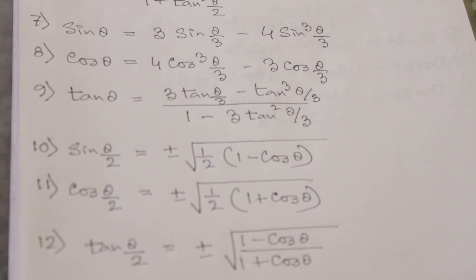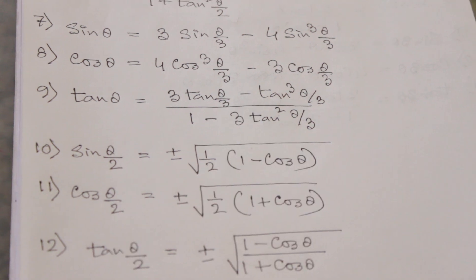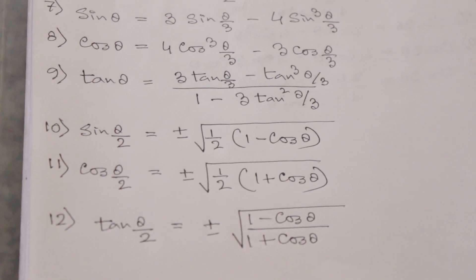Similarly, formula of cos θ will be equal to 4 cos³ θ/3 minus 3 cos θ/3.